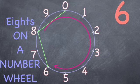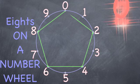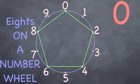Instead of 2, 4, 6, 8, 0, the eights are 8, 6, 4, 2, 0, creating the same pentagon backwards.